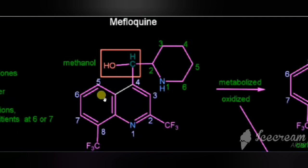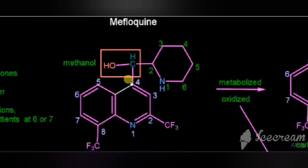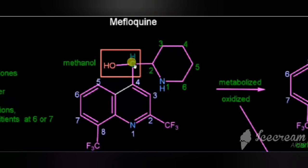So in summary, we have a quinoline nucleus with 2 trifluoromethyl groups, and in the 4th portion it is having a methanol, and the carbon of methanol is connected with piperidine. The 2nd carbon of piperidine is connected with methanol. That is the structure of mefloquine.